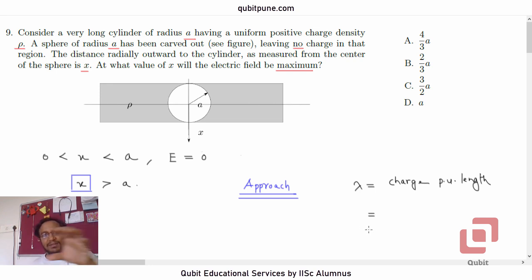Imagine we have a cylinder of length 1. What will be the total charge there? It will be the volume charge density rho multiplied by the volume of the cylinder, which will be pi r squared into h. But r is equal to A, so it will be rho pi A squared.